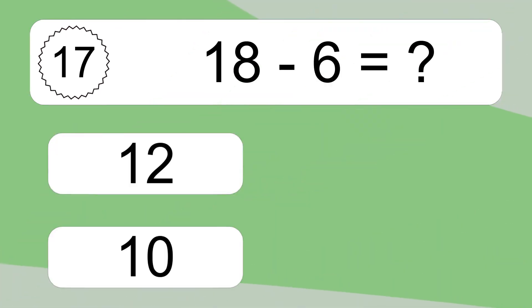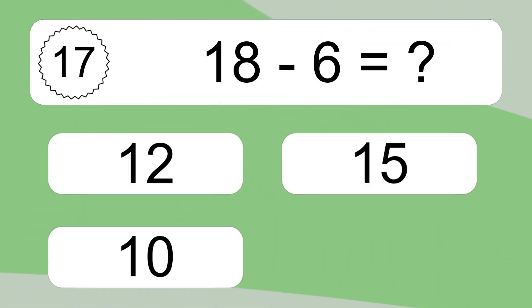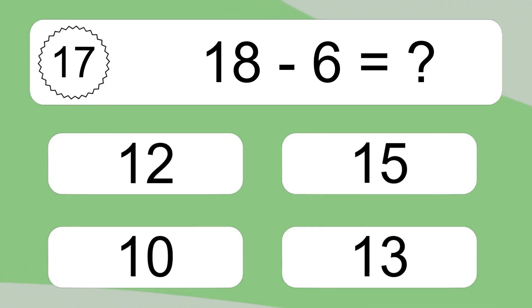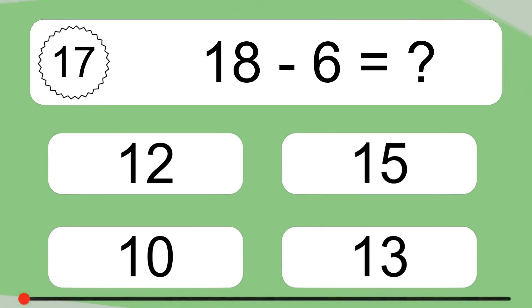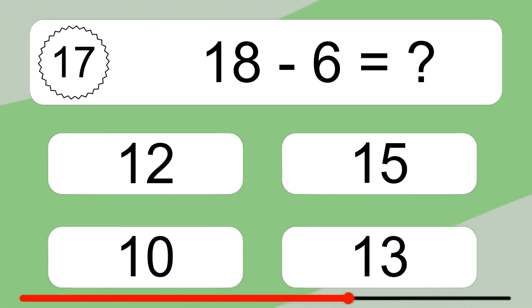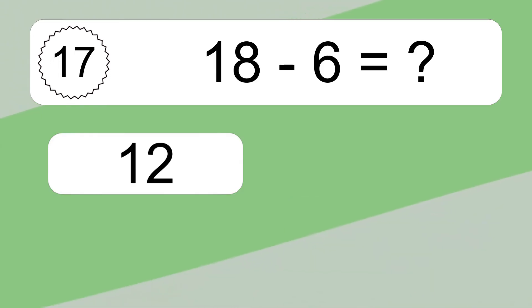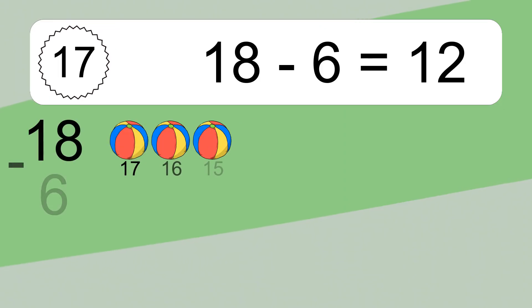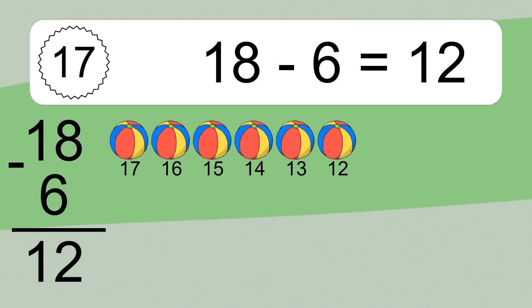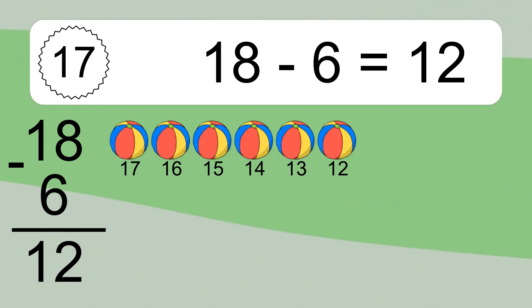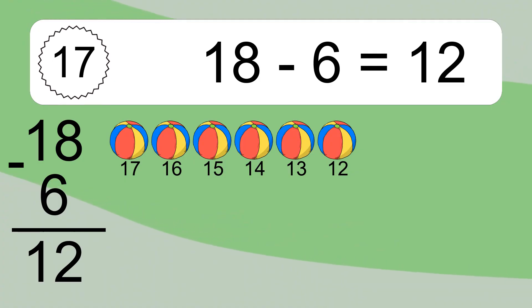18 minus 6 equals what? 18 minus 6 equals 12. Let's count it: 17, 16, 15, 14, 13, 12.